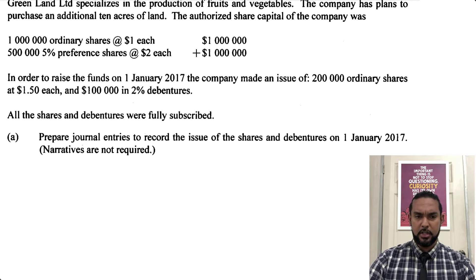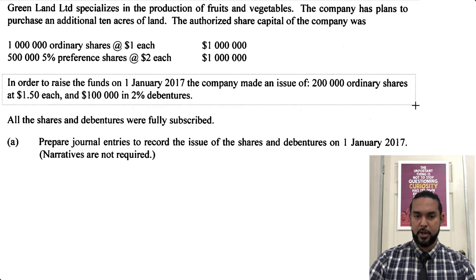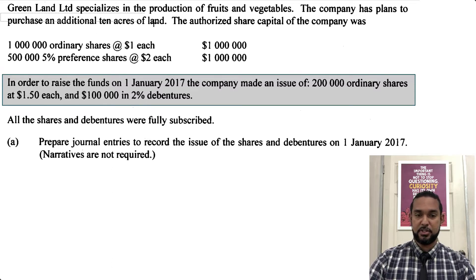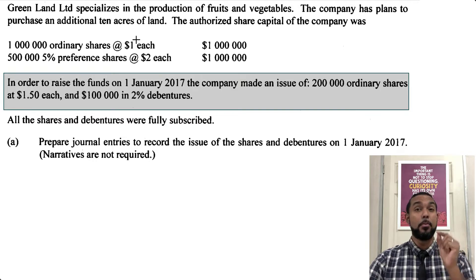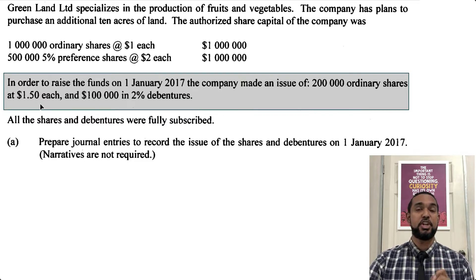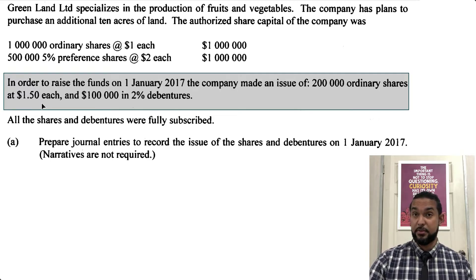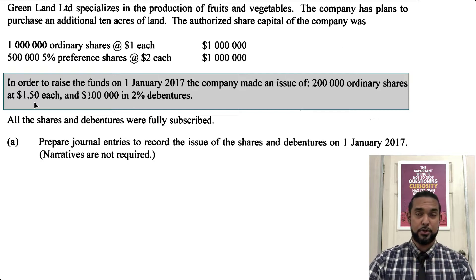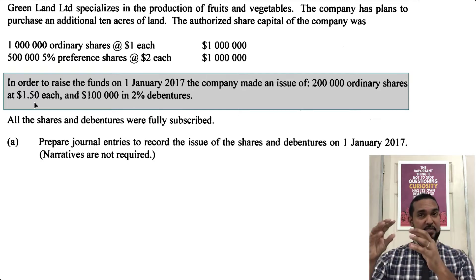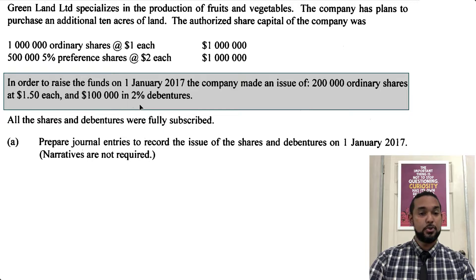Let's take a closer look at what's going on here. In order to raise the funds to purchase the additional 10 acres of land, they issue 200,000 ordinary shares at $1.50. Now that does not match the $1 par value — it's more than the par value. The extra 50 cents above the par value of a dollar is referred to as a share premium, and companies are free to issue shares at whatever price they think potential shareholders will want to purchase. So that 50 cents has to be accounted for separately from the par value.